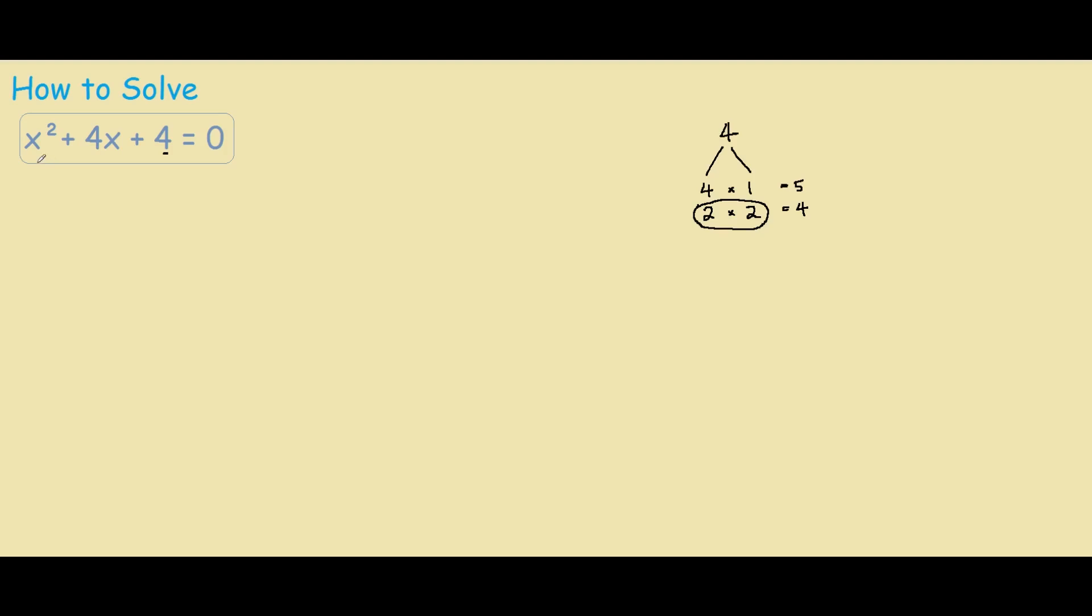So if you factor this problem, you get x plus 2 times x plus 2. The plus 2's come from our two factors, the 2 and 2, equals 0.